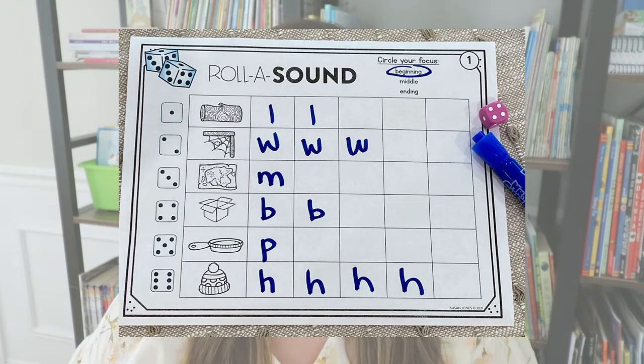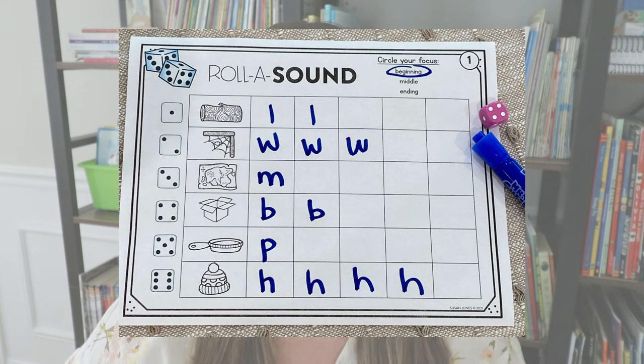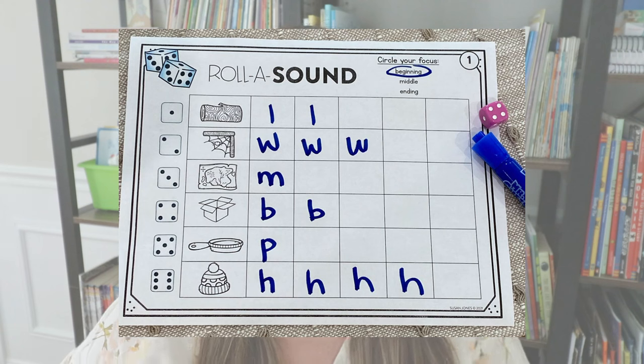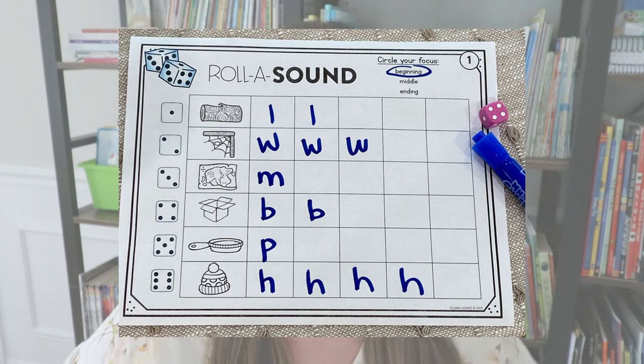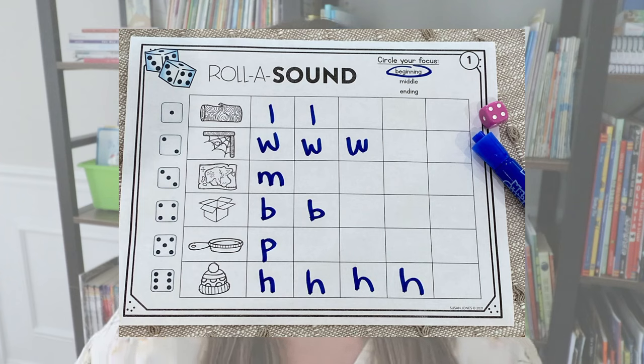Another fun game is called Roll a Sound. It was made with phonemic awareness in mind — thinking about beginning, middle, or ending sounds. For beginning sounds, students simply roll the die, look at the image, and write down the letter that matches that sound — writing the grapheme to match the phoneme. They keep rolling and writing until one of the rows is completely filled up. They can play with a partner and take turns, or do it by themselves until they fill a row. I'll link that one in the description as well.